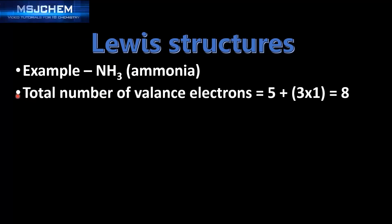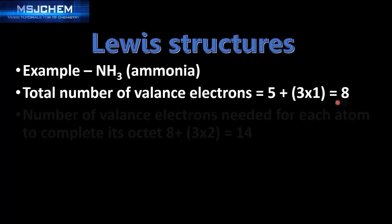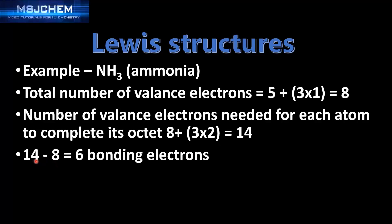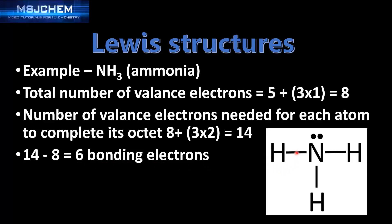Let's try one more example: the Lewis structure of NH3, which is ammonia. Nitrogen has 5 valence electrons and hydrogen has 1, with 3 hydrogens, so 5 plus 3 times 1 equals 8 valence electrons. Nitrogen needs 8 electrons but hydrogen only needs 2, so 8 plus 3 times 2 equals 14. Subtracting 8 from 14 gives 6 bonding electrons. The Lewis structure shows single bonds between nitrogen and each hydrogen atom, using 6 bonding electrons, with the 2 remaining electrons placed as a lone pair on the nitrogen atom.